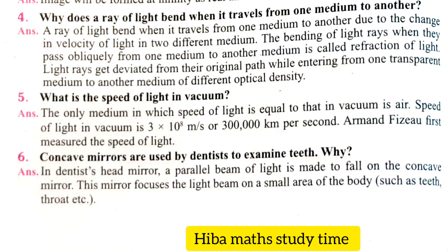Fifth question: what is the speed of light in vacuum? The only medium in which speed of light is equal to that in vacuum is air. The speed of light in vacuum is 3 × 10⁸ meters per second, or 3 lakh kilometers per second. Armand Fizeau first measured the speed of light.